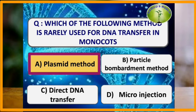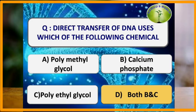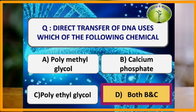Which method is rarely used for DNA transfer in monocots? The plasmid method is rarely used for DNA transfer in monocots because it is only used for transfer in dicots, and in monocots it is only used for asparagus and yam.